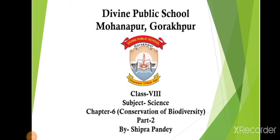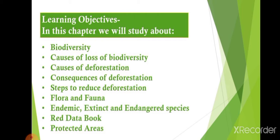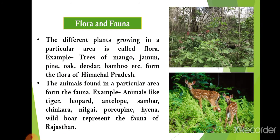Hello students, good morning. We are discussing Chapter 6 of Class 8 Science, that is Conservation of Biodiversity. This is the second part of the chapter. In the previous part, we studied about biodiversity, causes of its loss, causes and consequences of deforestation, and steps to reduce deforestation. In this part, we will study about flora and fauna, endemic, extinct and endangered species, the Red Data Book, and protected areas including national parks, wildlife sanctuaries and biosphere reserves.